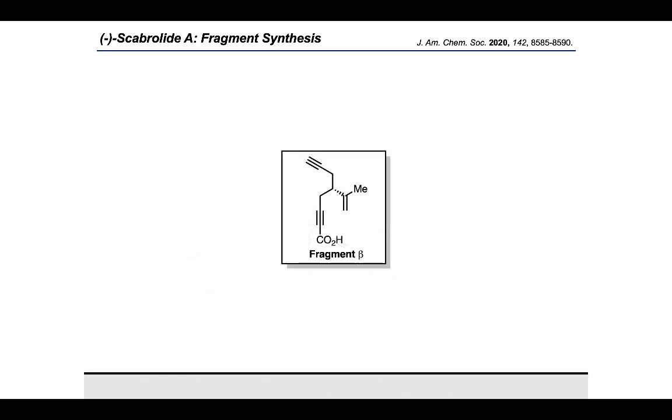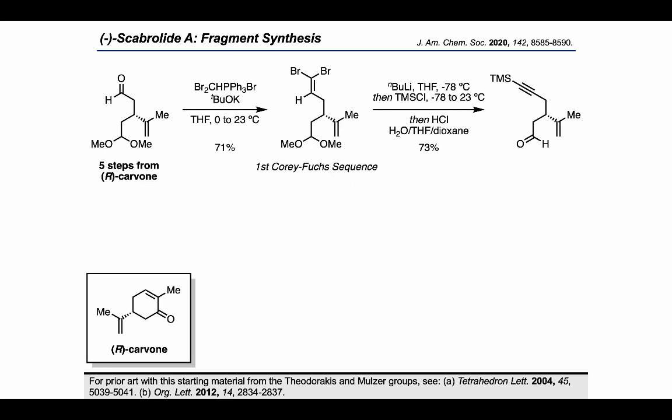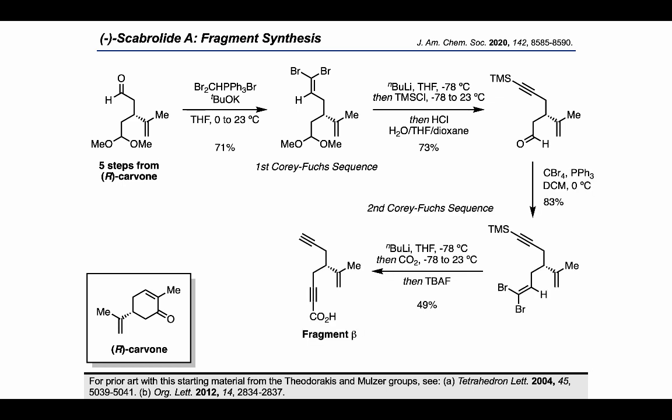Let's have a look at fragment beta and see what their approach to this one was. To get at this fragment, they started from a chiral aldehyde, which can be obtained in five steps from carvone. To convert the aldehyde into a protected alkyne, they executed a Corey-Fuchs sequence, followed by treatment with acid, which allowed them to deprotect the acetal and reveal the aldehyde. Executing a second Corey-Fuchs sequence, this time with a CO₂ trap, allowed them to form the alkynoic acid, at which point they used TBAF to remove the TMS group from the first alkyne they installed. With that, they had fragment beta ready to go.